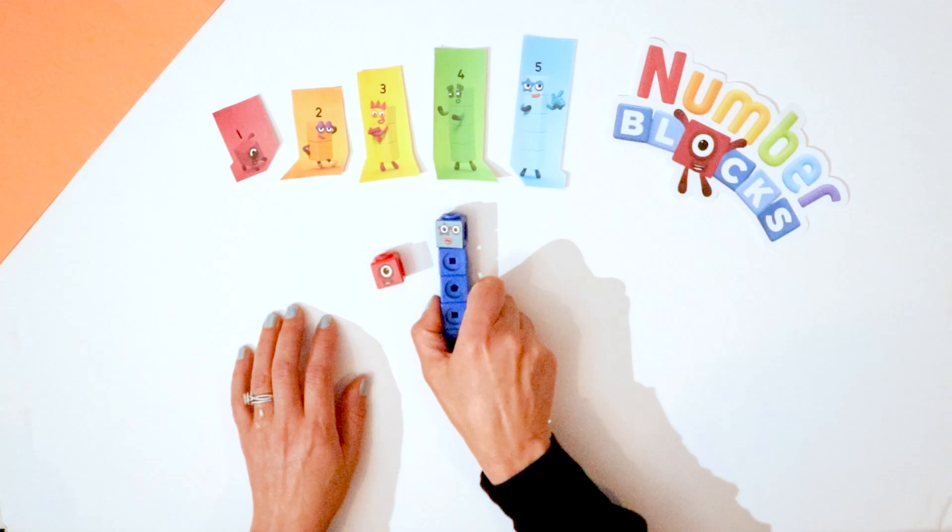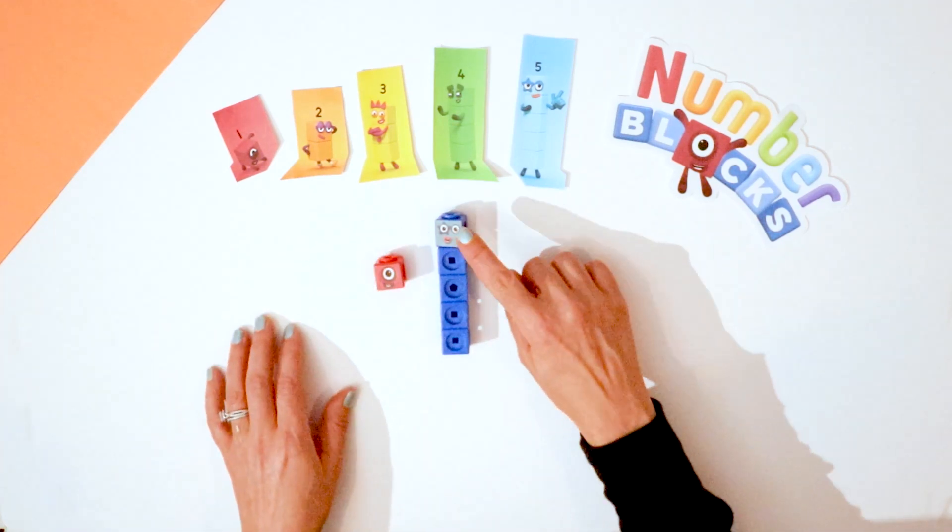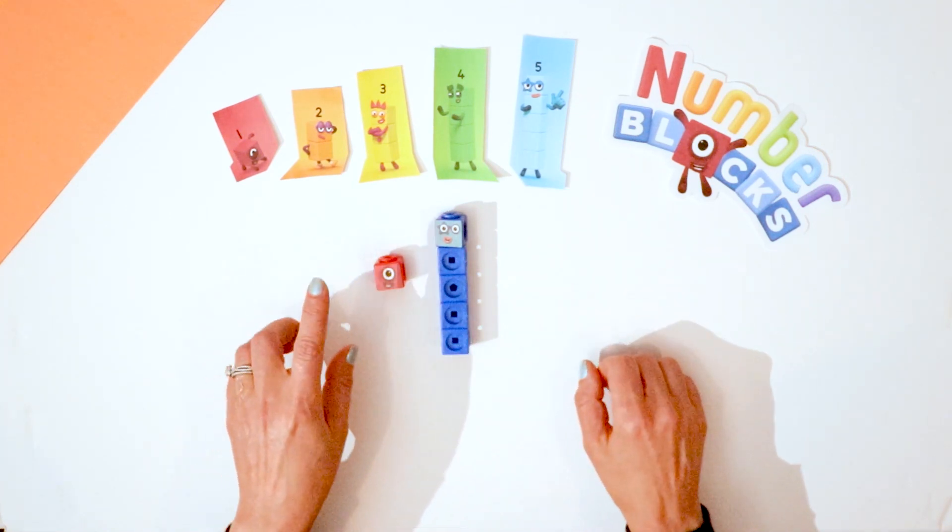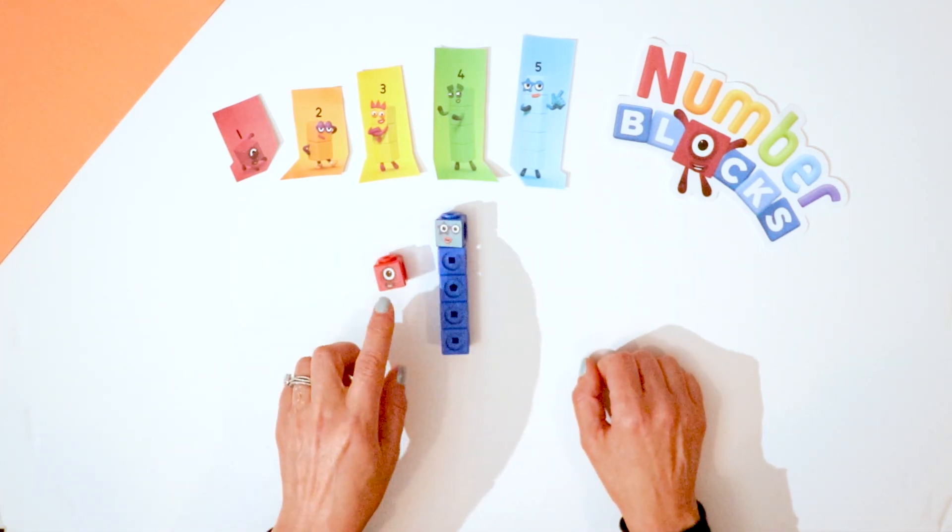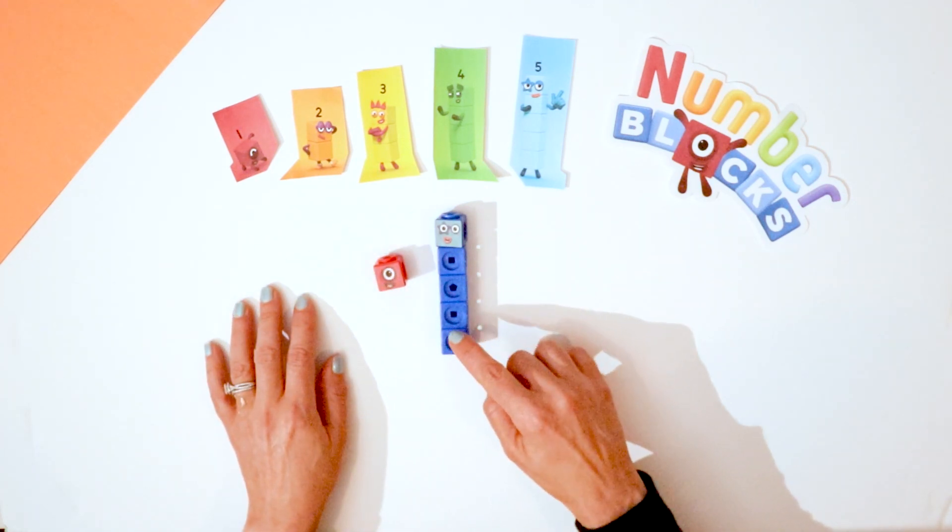One plus five equals six. One, two, three, four, five, six. One plus five equals six. One, two, three, four, five, six.